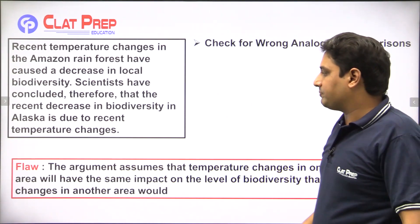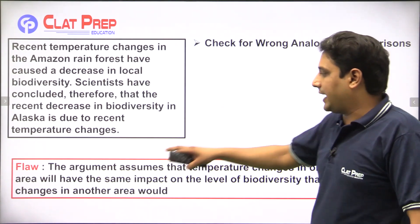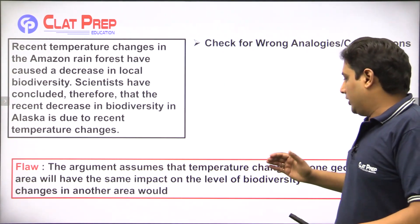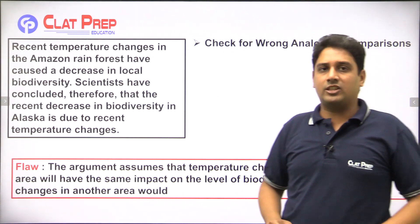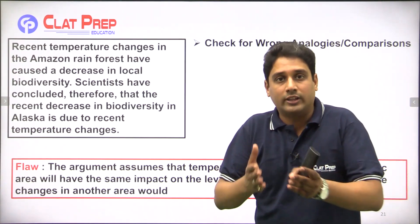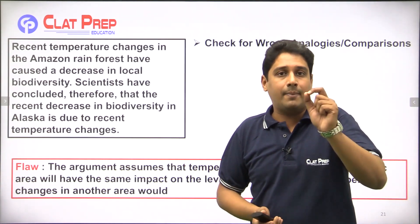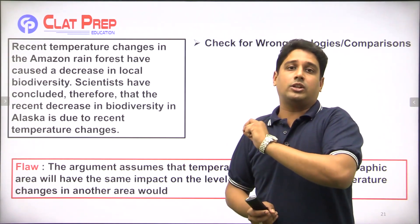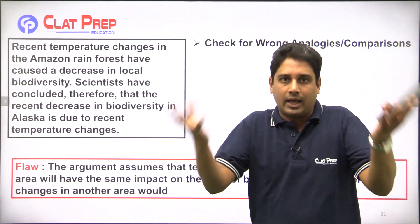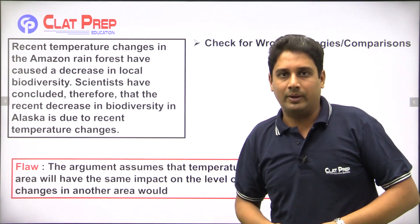So what is the flaw here? The Amazon rainforest and Alaska are two different geographical areas. What seems to take place in one area may not necessarily occur in another. The argument assumes that temperature changes in one geographic area will have the same impact on the level of biodiversity as temperature changes in a completely different geographic area — and that is wrong. There might be differences; it depends on the region. This is a wrong analogy and wrong comparison because two different geographic areas have been compared.